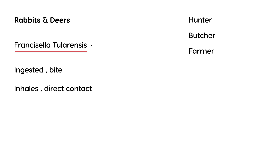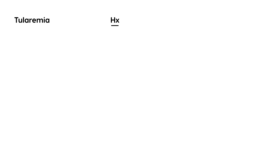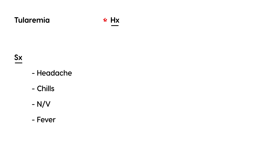Francisella tularensis is a bacillus organism. When you develop tularemia, the history is probably the most important part because the symptoms are so vague. The symptoms — headache, chills, nausea and vomiting, fever — are so vague that this could be anything. So the most important part of diagnosing tularemia initially is the history.